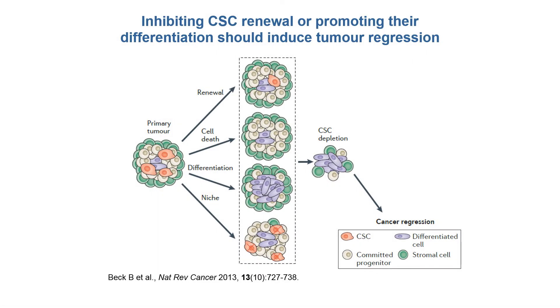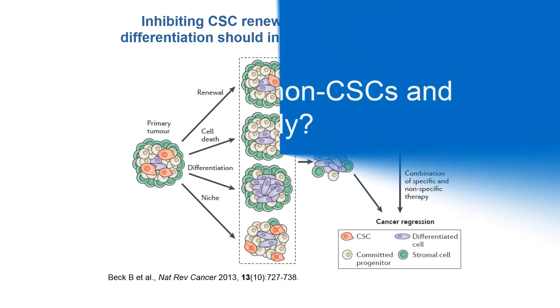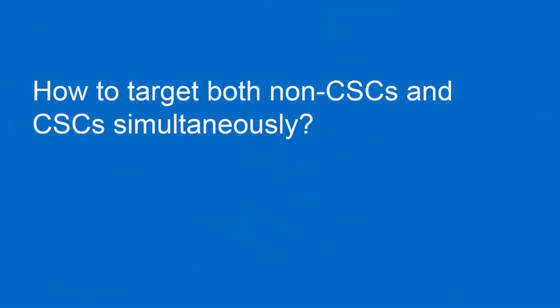Although the cancer stem cell model suggests that inhibiting cancer stem cell renewal or promoting their differentiation should induce tumor regression, recent studies have shown that non-stem cancer cells can also trans-differentiate into cancer stem cells and confer resistance to therapy. Therefore, there is an urgent need to identify novel approaches to target both cancer stem cells and non-stem cancer cells simultaneously.